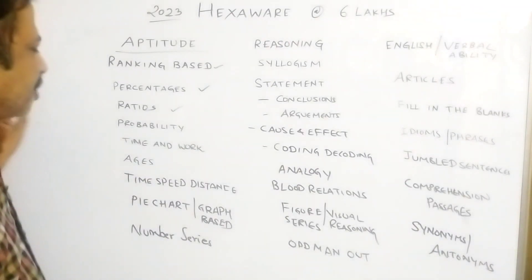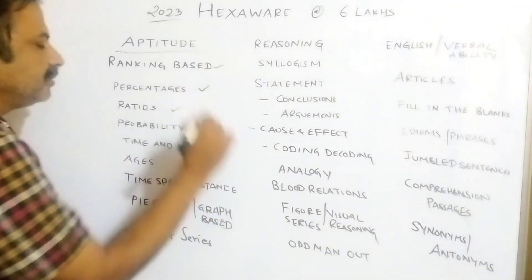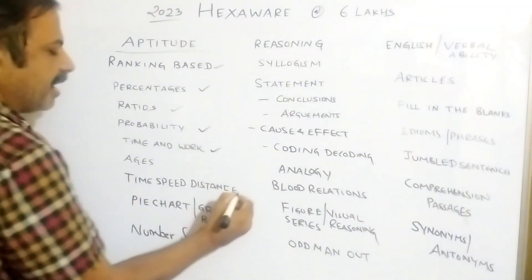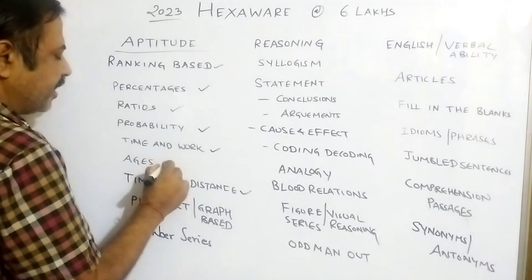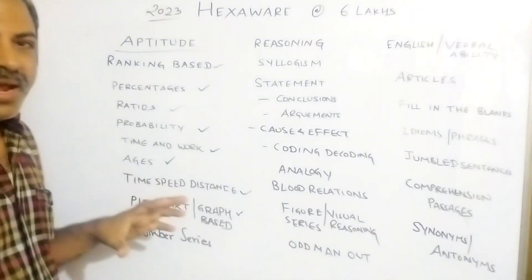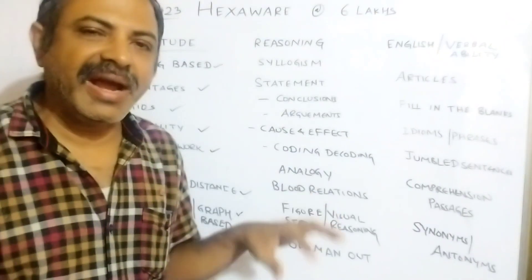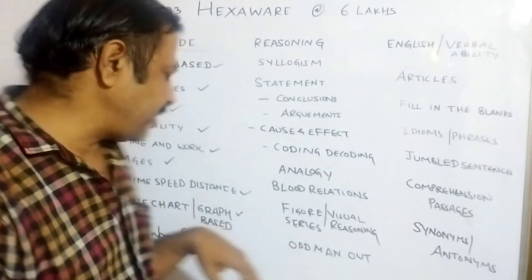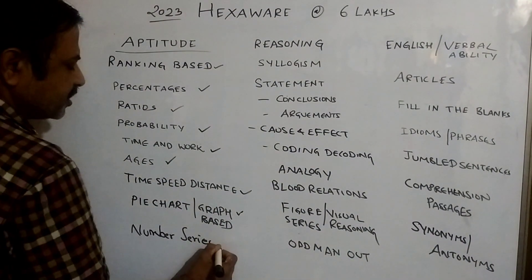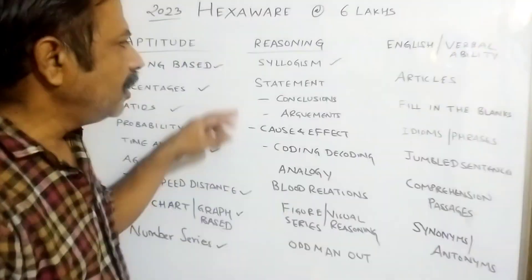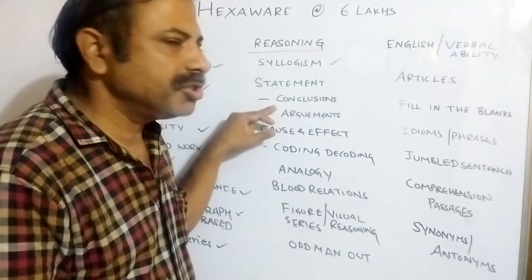Ratio and proportions, probability, time and work, time-speed-distance, ages, pie chart or graph-based questions — you will get a pie diagram and questions based on that, line graph, bar graph, and questions based on those. Number series is also a common topic. Now coming to the reasoning part: syllogism, Venn diagram questions, statement and conclusion.